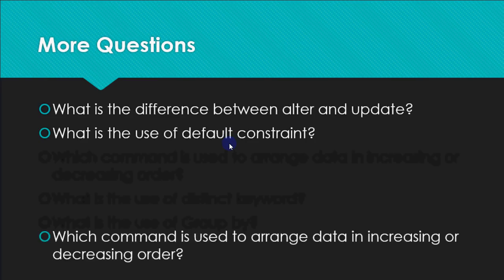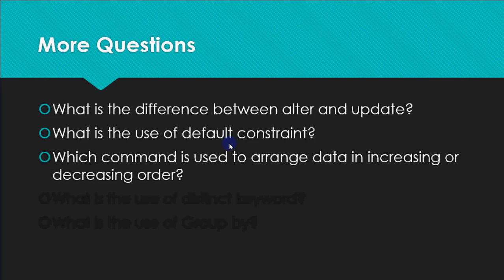To arrange data in increasing or decreasing order, use ORDER BY. The syntax is: ORDER BY column_name. For increasing order, nothing extra needs to be written. For decreasing order, write DESC after the column name to specify descending order.